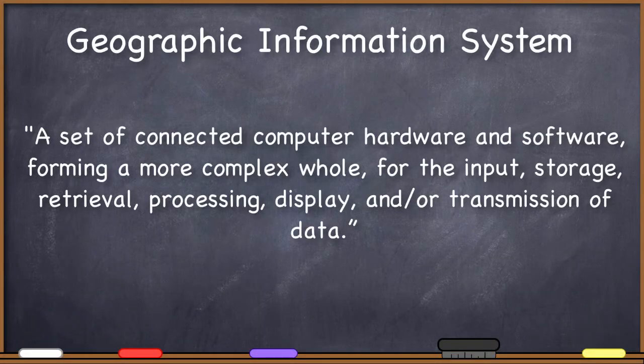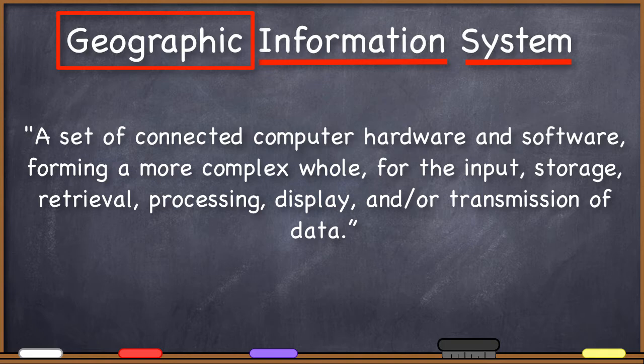So that's two words down — system and information. That just leaves us with one more word to consider: geographic. We have this very general idea of what it means for something to be an information system, but we're not dealing with just any kind of information here. We have this modifier: geographic.